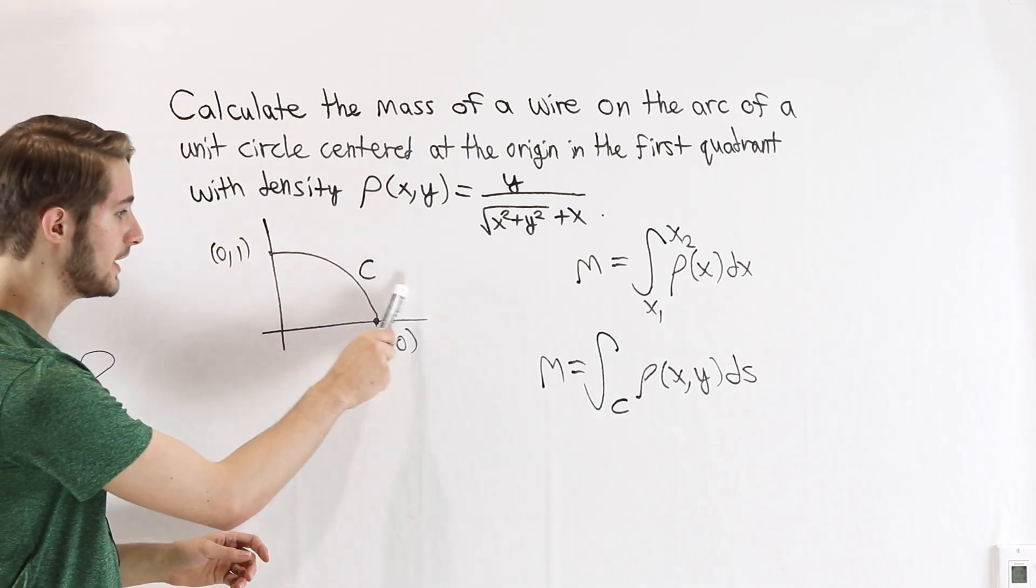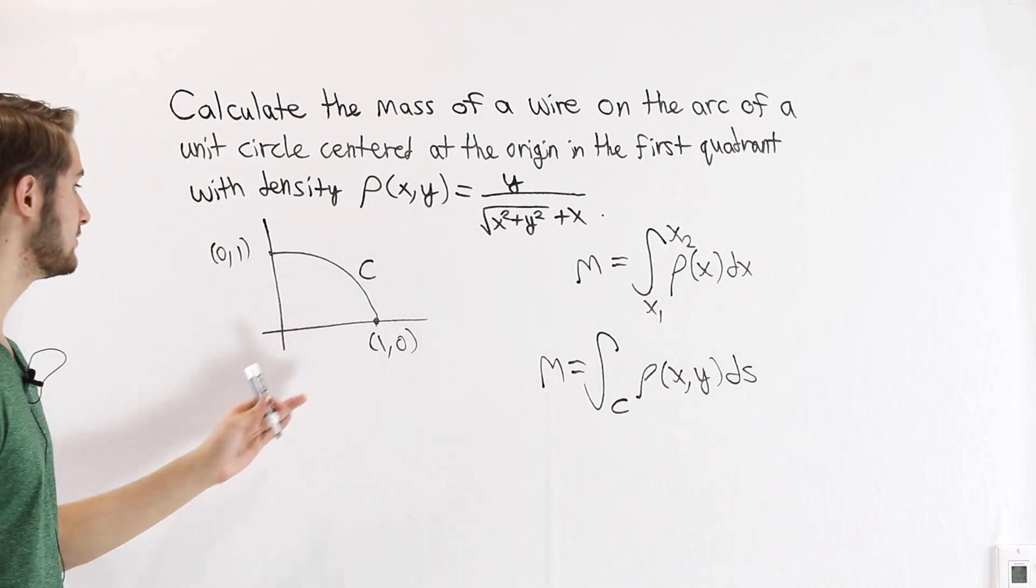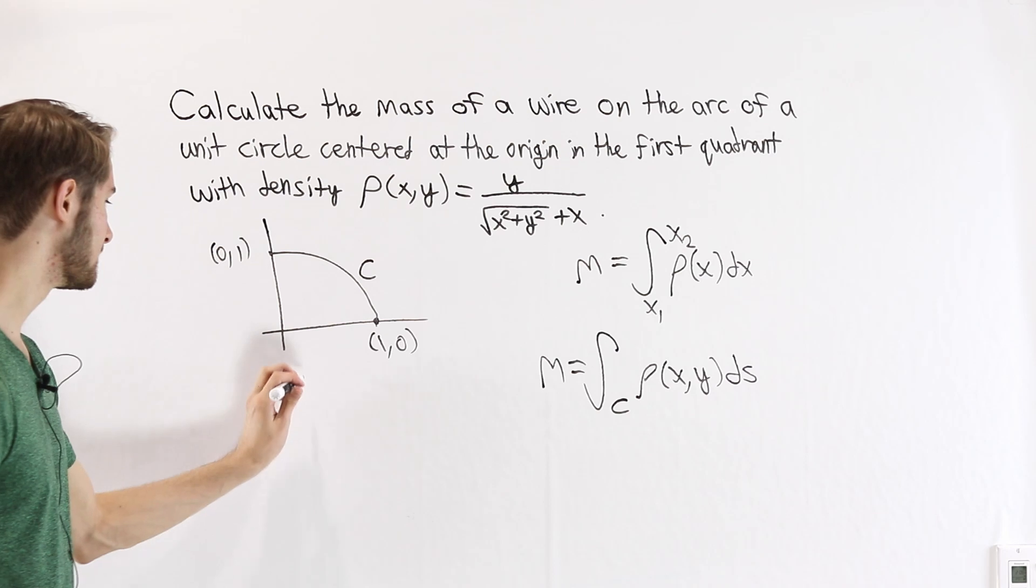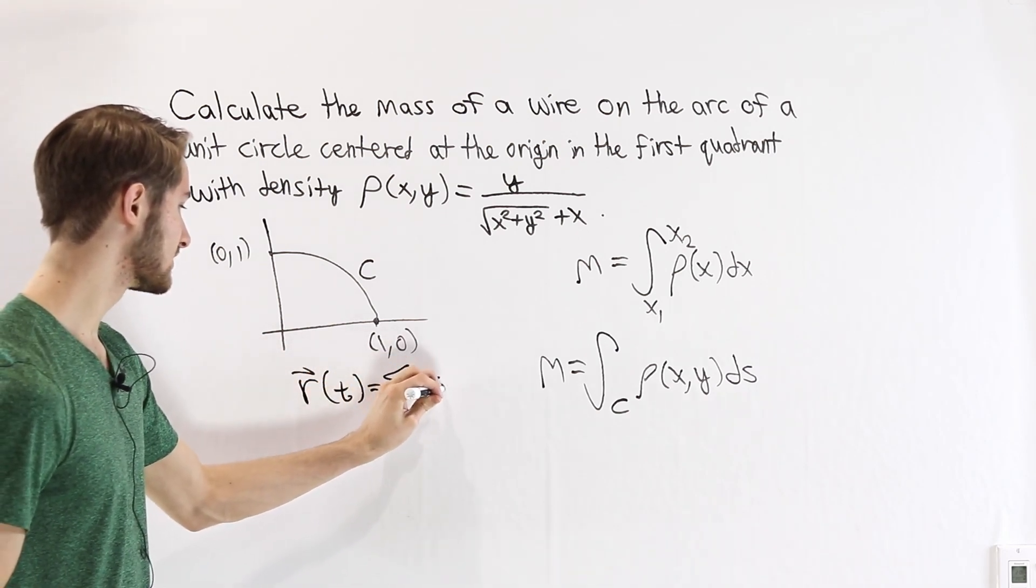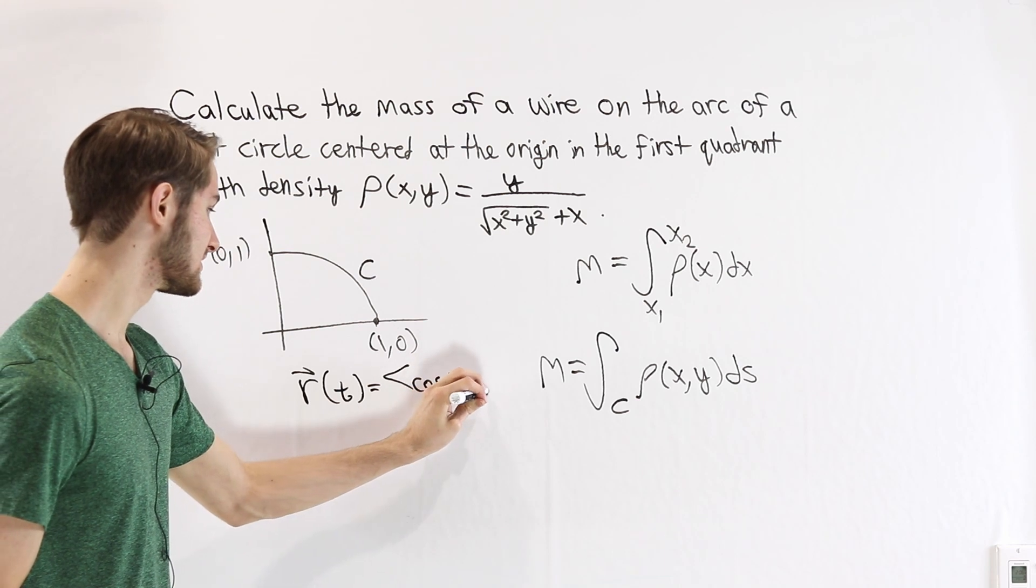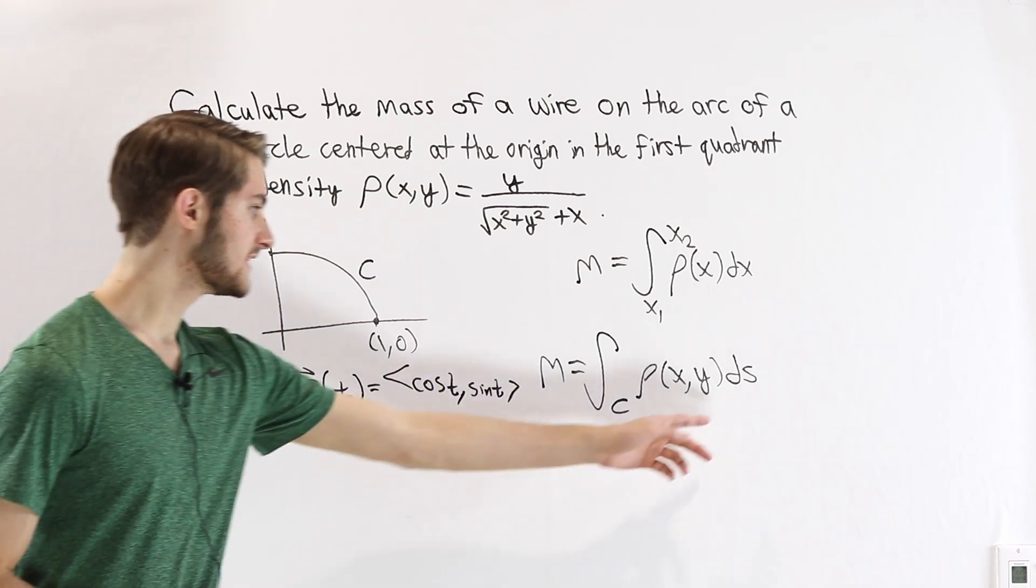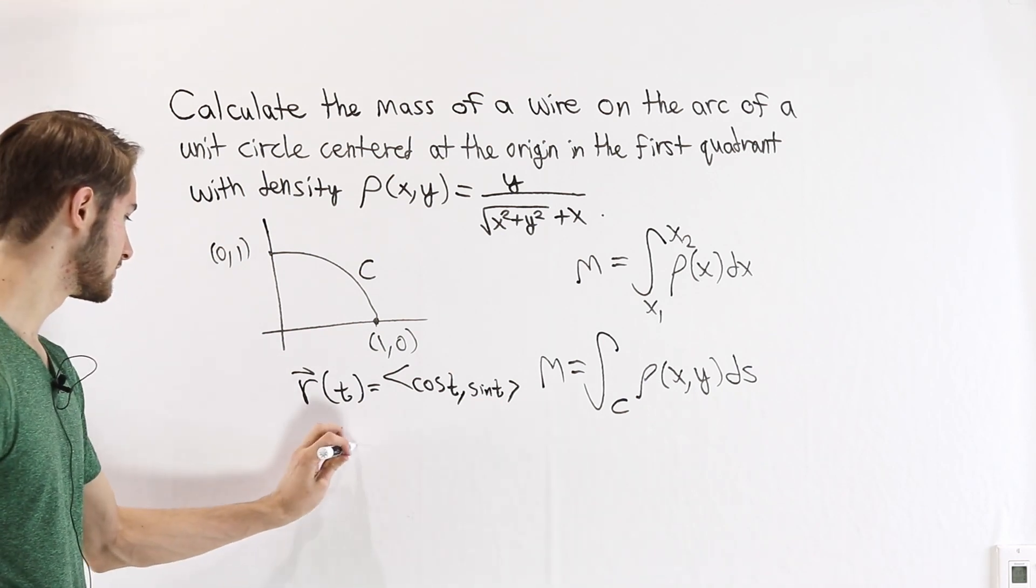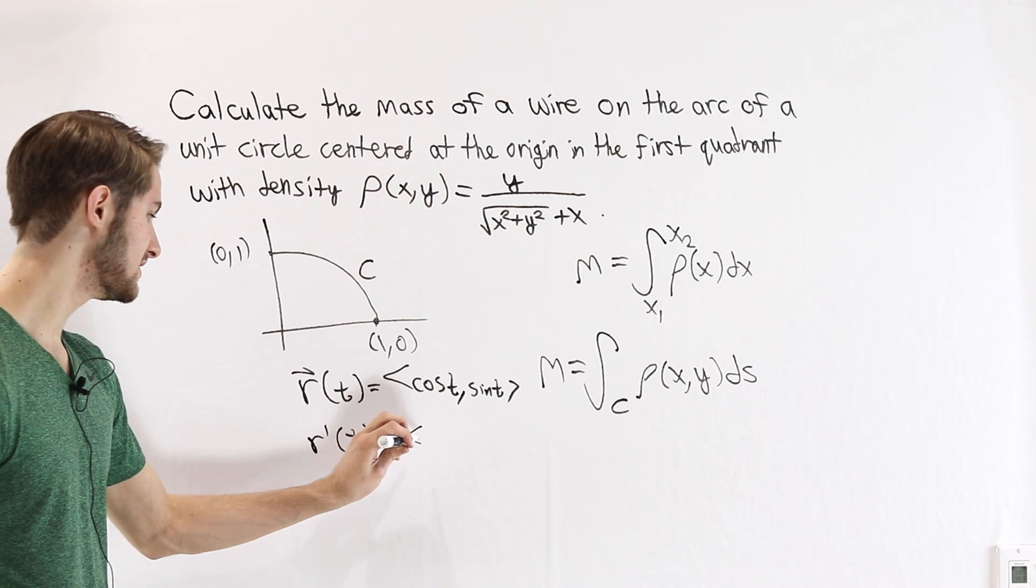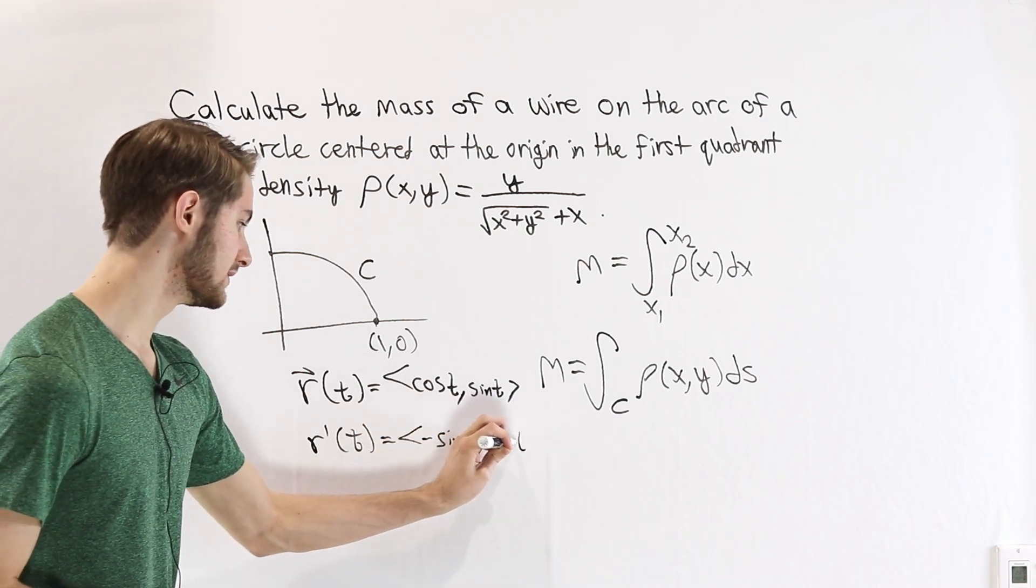So now we need to parametrize our curve C so we can start plugging things in. This is a pretty simple case because we're just looking at a unit circle. So we can have r be equal to cosine t as the x value, sine t as the y value. From here, in order to find ds, we're going to need to differentiate r(t). So if we do that, we're going to get r'(t) as the negative sine of t, cosine t.